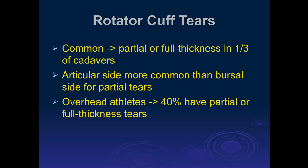It was thought in Neer's day that the primary cause of rotator cuff tears was outlet impingement. If that were the case, you would expect that the majority of tears would be on the bursal side surface. But when you actually look at cadavers and at arthroscopic studies, the majority of the tears are not bursal side — they're articular side. This is strong evidence that it's a primary traction mechanism and a degenerative tearing mechanism rather than mechanical impingement from the bone.